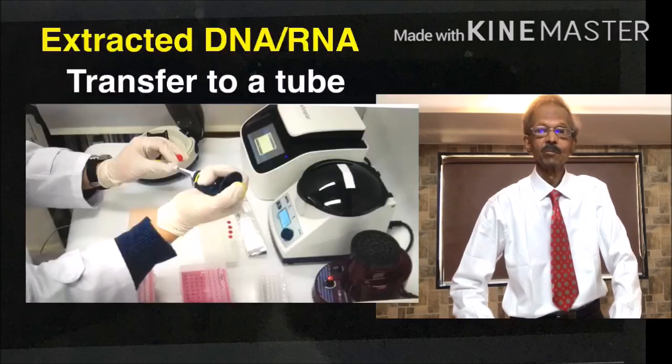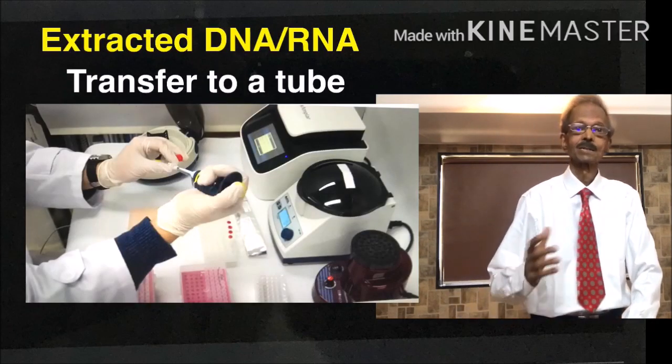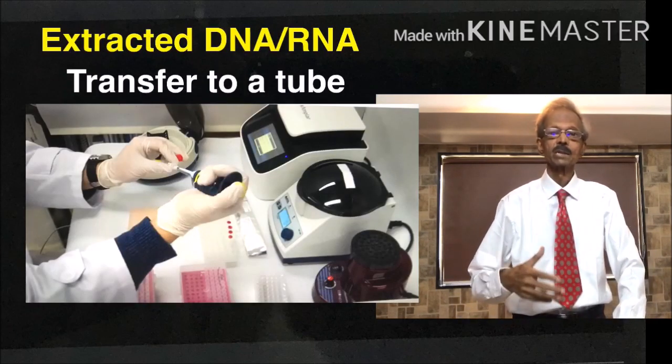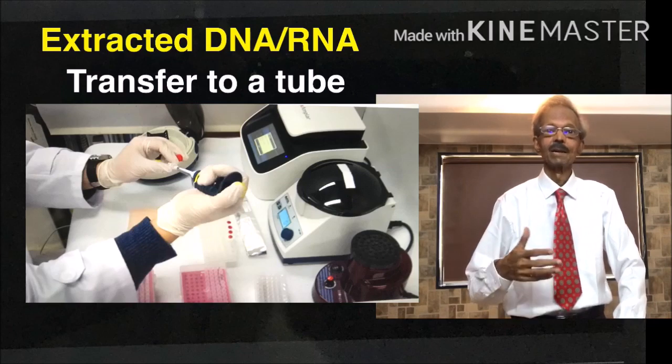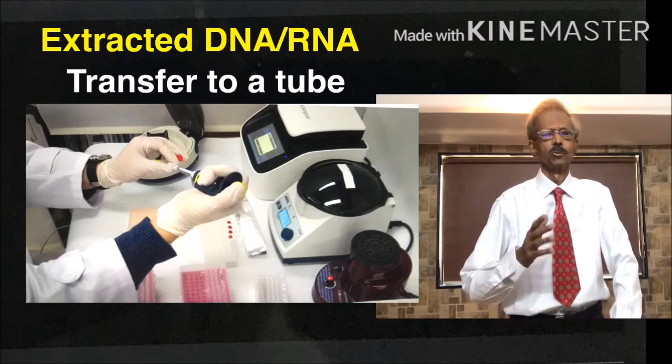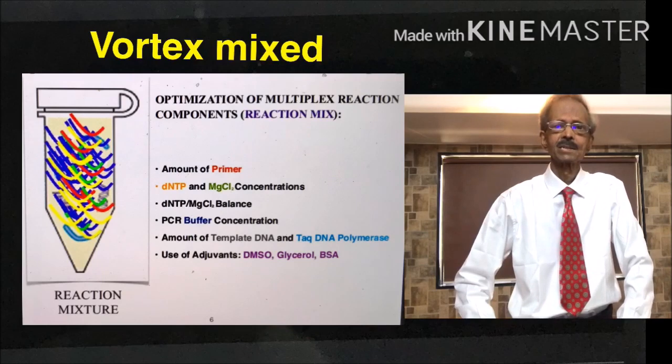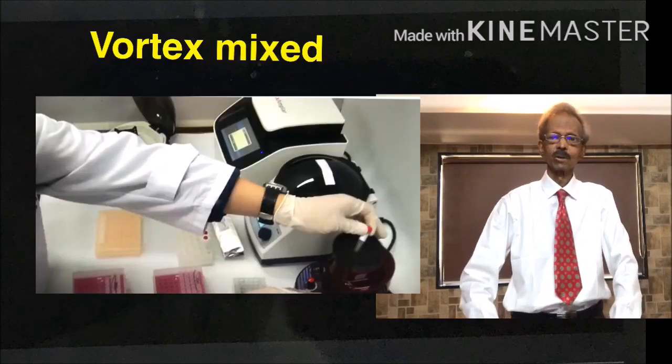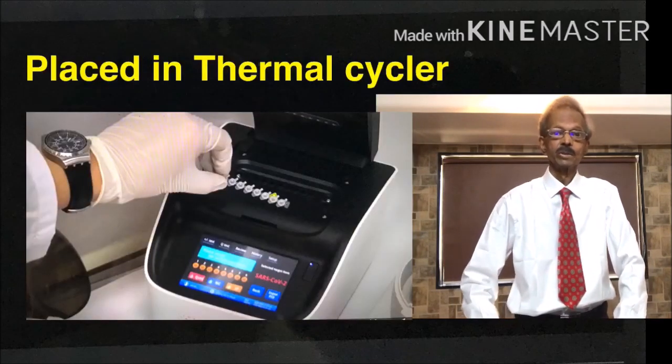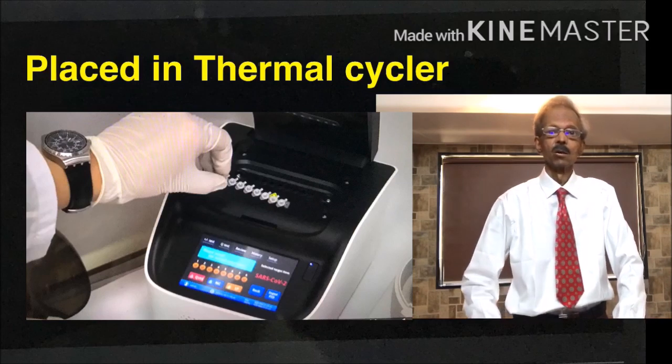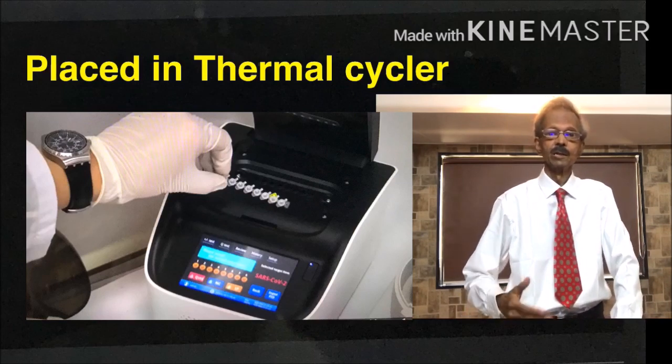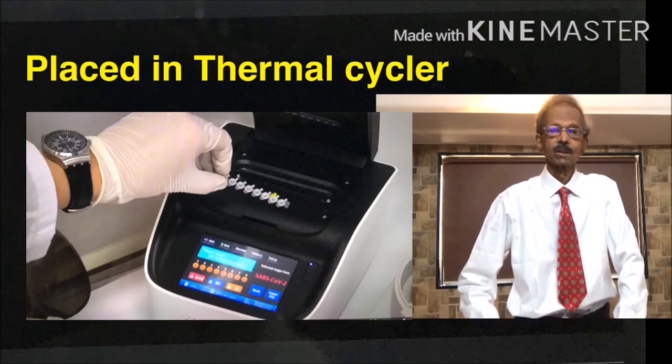Next, upper two layers are then placed in another ependorf which contain RNAs and DNAs. And master mix reagent is added. It is vortex mixed and placed on thermal cycler for multiplication of DNAs along with positive and negative controls.